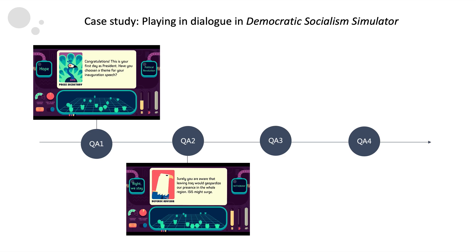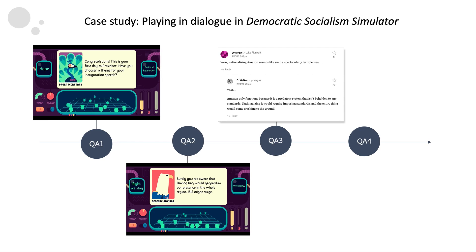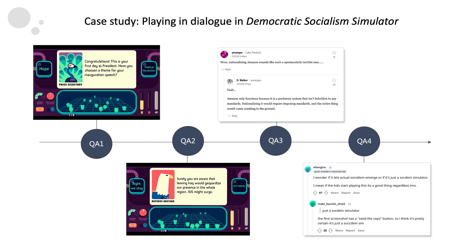Because of such openness embedded in the game rules, what the game provided is not a clear message predefined by the designer, but an environment for the player to test out different political ideas. The in-game discussions can be easily extended to political discourses in real life. For example, on the discussion board on Kotaku, many players are debating the in-game option of nationalizing Amazon. The dialogue triggered by this game has prompted people to reflect on actual policy proposals. In a sense, this game can be seen as an online version of Beuys' conceptual work Office for Direct Democracy by Referendum introduced before.